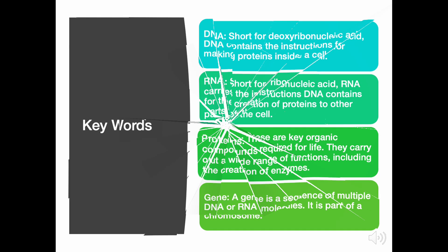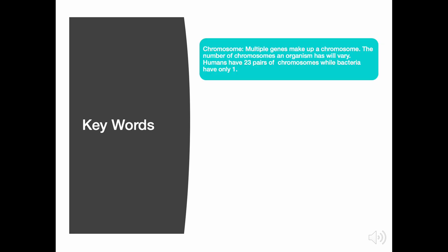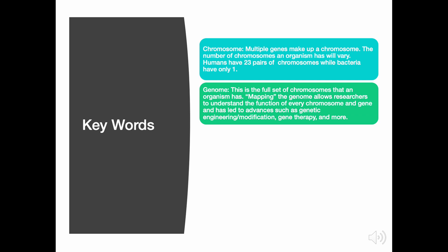A chromosome is made up of multiple genes. The number of chromosomes an organism has will vary — humans have 23 pairs of chromosomes, while bacteria only have one. The full set of chromosomes an organism has is known as a genome.